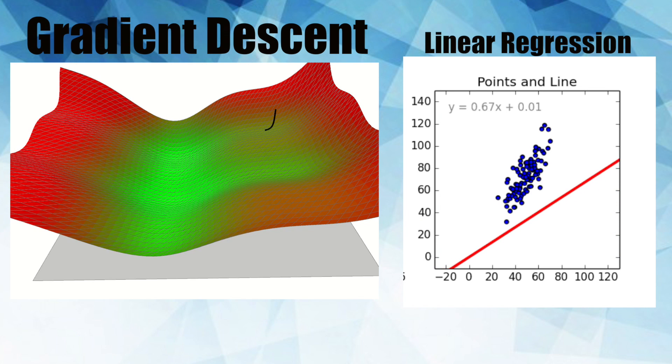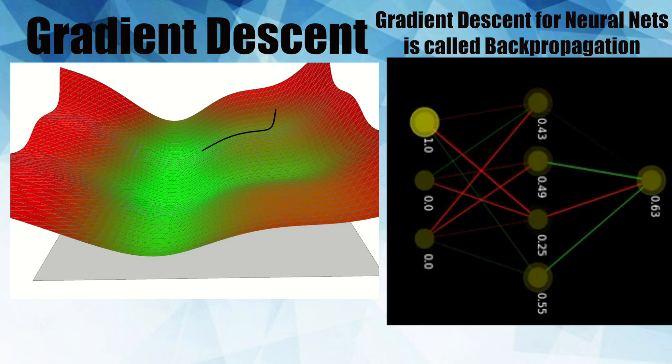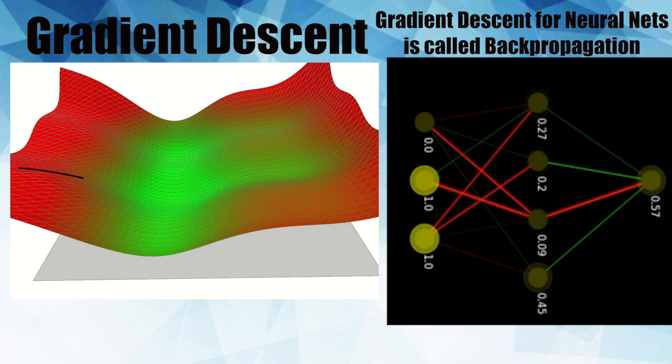Gradient descent is a popular optimization technique and can be used in many different types of machine learning models. It's used to optimize or improve the accuracy of our models predictions. One implementation of it that is particularly popular is for neural networks.